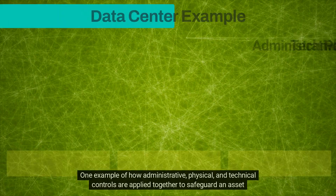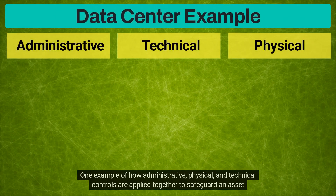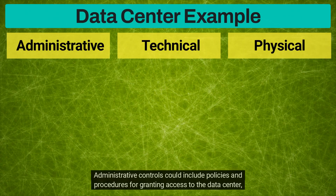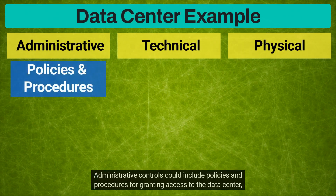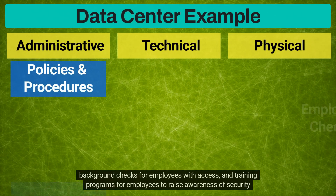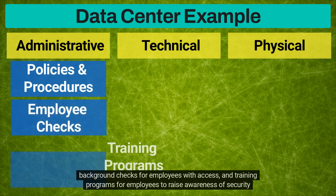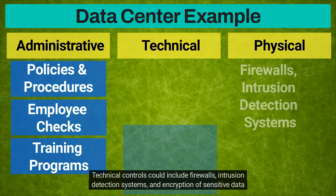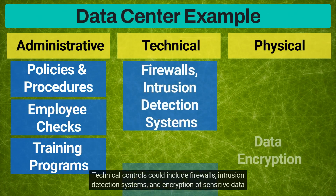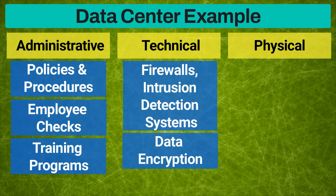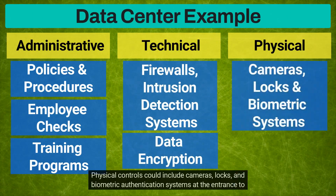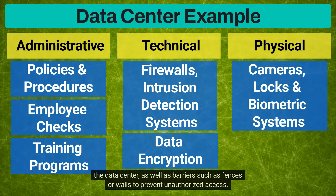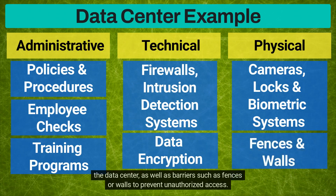One example of how administrative, physical, and technical controls are applied together to safeguard an asset is in securing a data center. Administrative controls could include policies and procedures for granting access, background checks for employees, and training programs to raise awareness of security threats. Technical controls could include firewalls, intrusion detection systems, and encryption of sensitive data stored within the data center. Physical controls could include cameras, locks, and biometric authentication systems at the entrance, as well as barriers such as fences or walls to prevent unauthorized access.